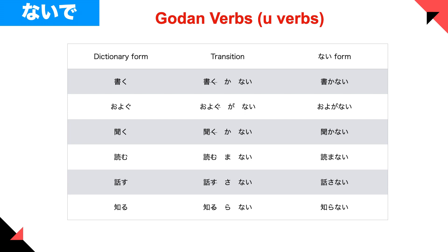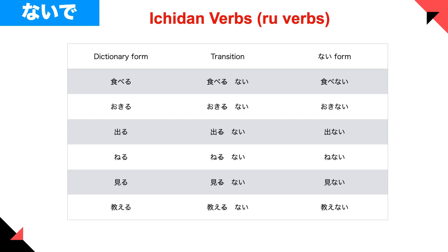You change the last character — for example, ku into ka — and then add nai at the end. Let's look at 一段 verbs, or ru-verbs: 食べる → 食べない, 起きる → 起きない, 出る → 出ない, 寝る → 寝ない, 見る → 見ない, 教える → 教えない.